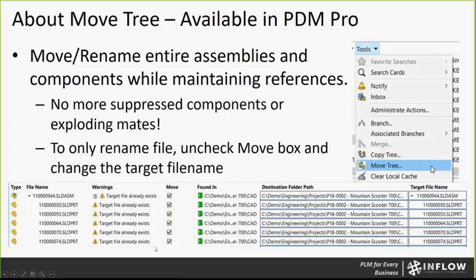With MoveTree, you can choose to move the file — you can move some of the components or all of the components. You can also rename the file at the same time, or you can even just rename the file. Sometimes if you just want to rename an entire assembly — maybe people start with a concept part number and then want to switch over — you could run MoveTree, not select any of them for move, and give them a different target file name, and it'll rename everything for you. The biggest benefit for CopyTree and MoveTree is that they're built to maintain your references within the PDM Vault, unlike Pack and Go or Save As.